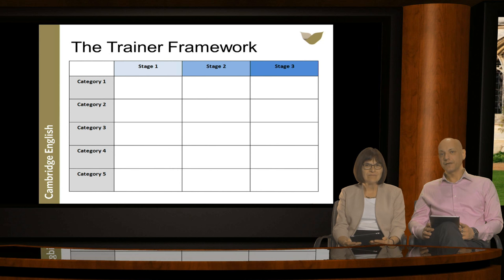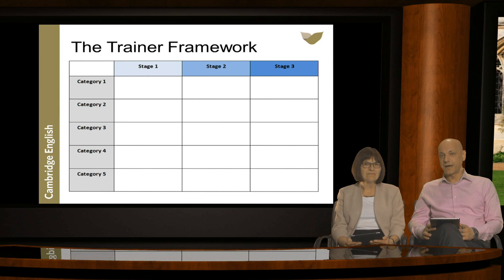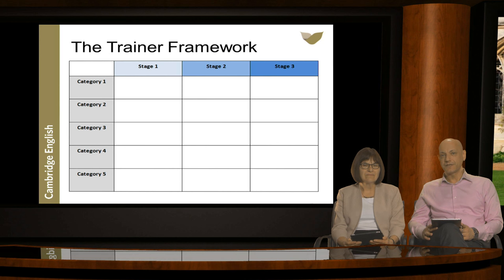There are many job descriptions and minimum standards for trainers, often heavily admin-based, focusing on record keeping or reporting. There are also descriptions of good training practice and case studies of individual trainers. But what we were interested in was how trainers develop skills over time — and there's very little research on this. We wanted a trainer framework describing trainer skills and competencies at different stages of development. But what skills do trainers actually need?